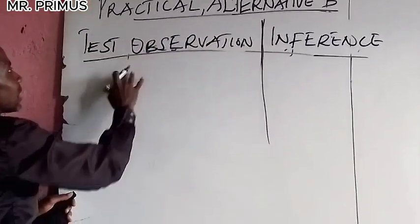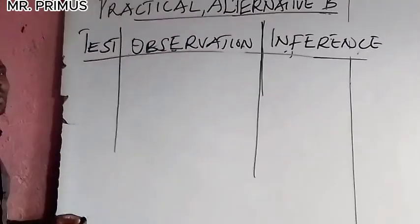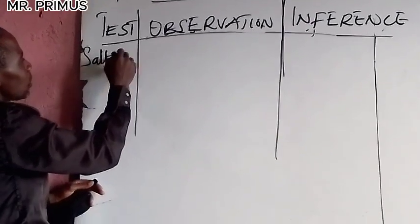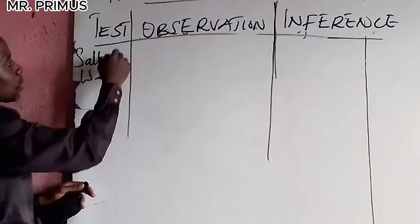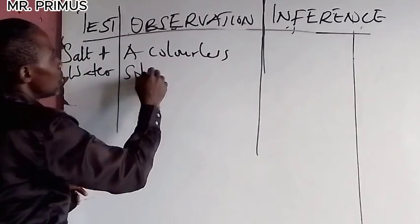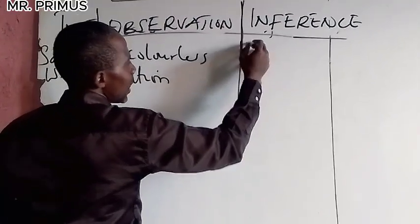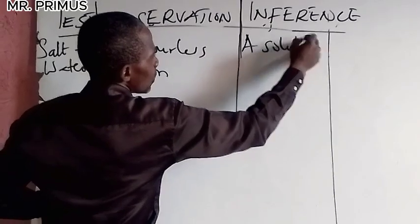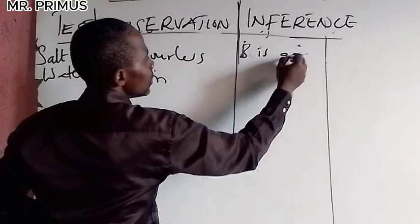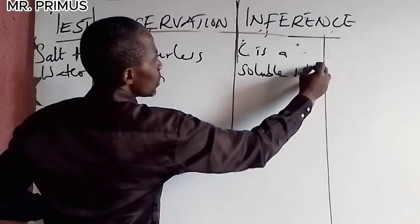Now, another thing I observed. Look at students recording their observations. For example: salt plus water gives a colorless solution. Then the inference written was: C is a soluble salt. That is an instance. Now look at the next thing — when writing a reagent like HCl, you must specify whether it is dilute or concentrated.